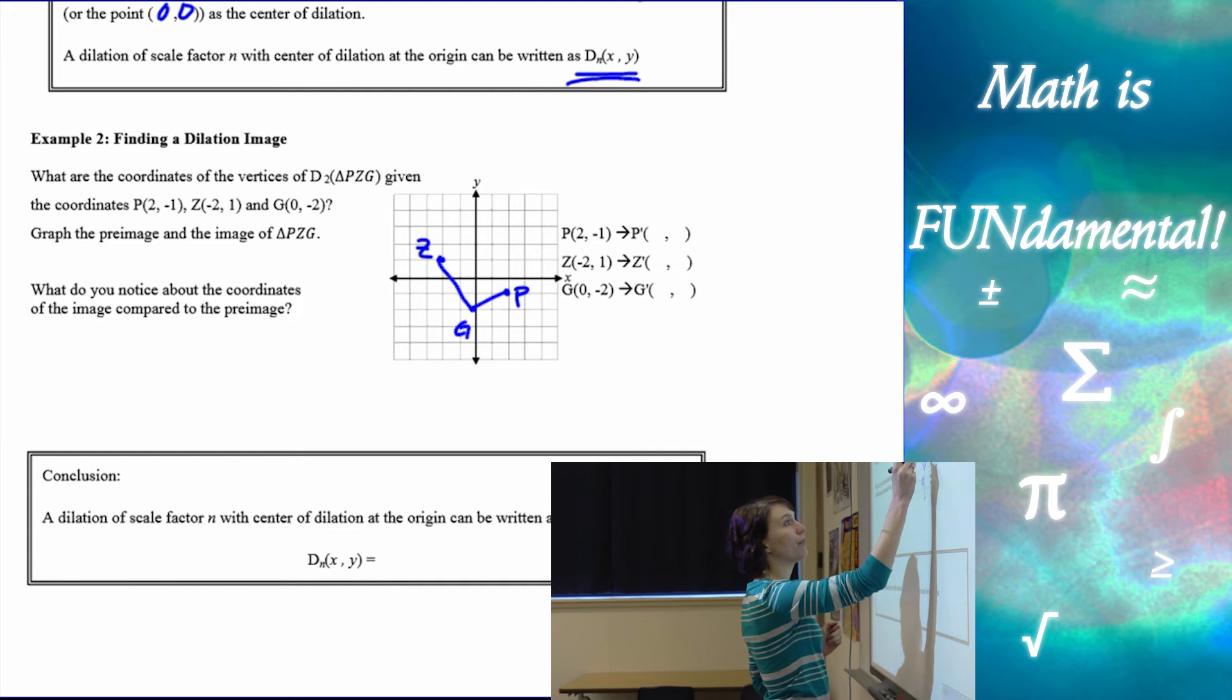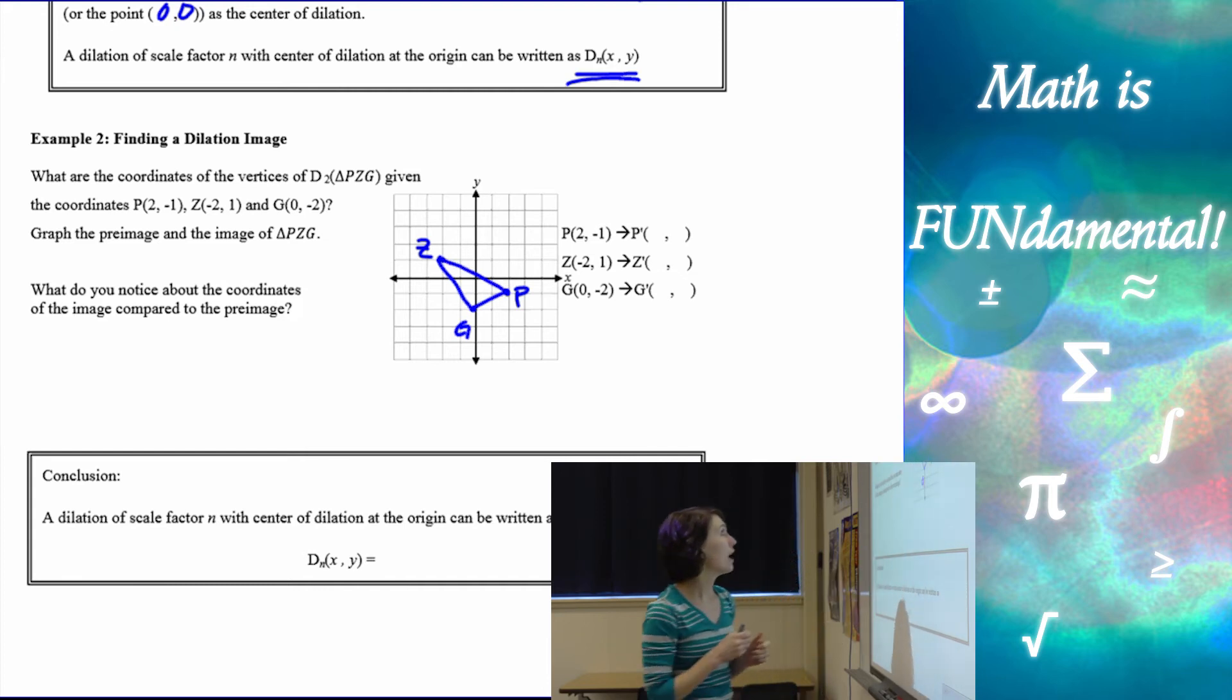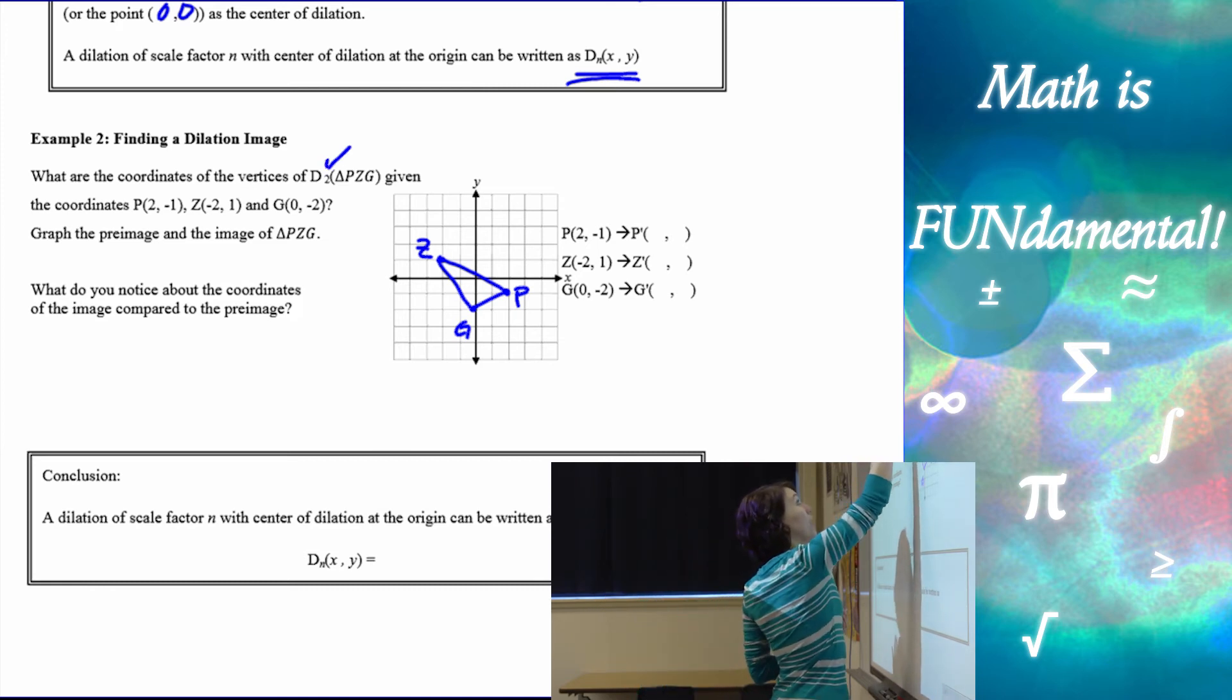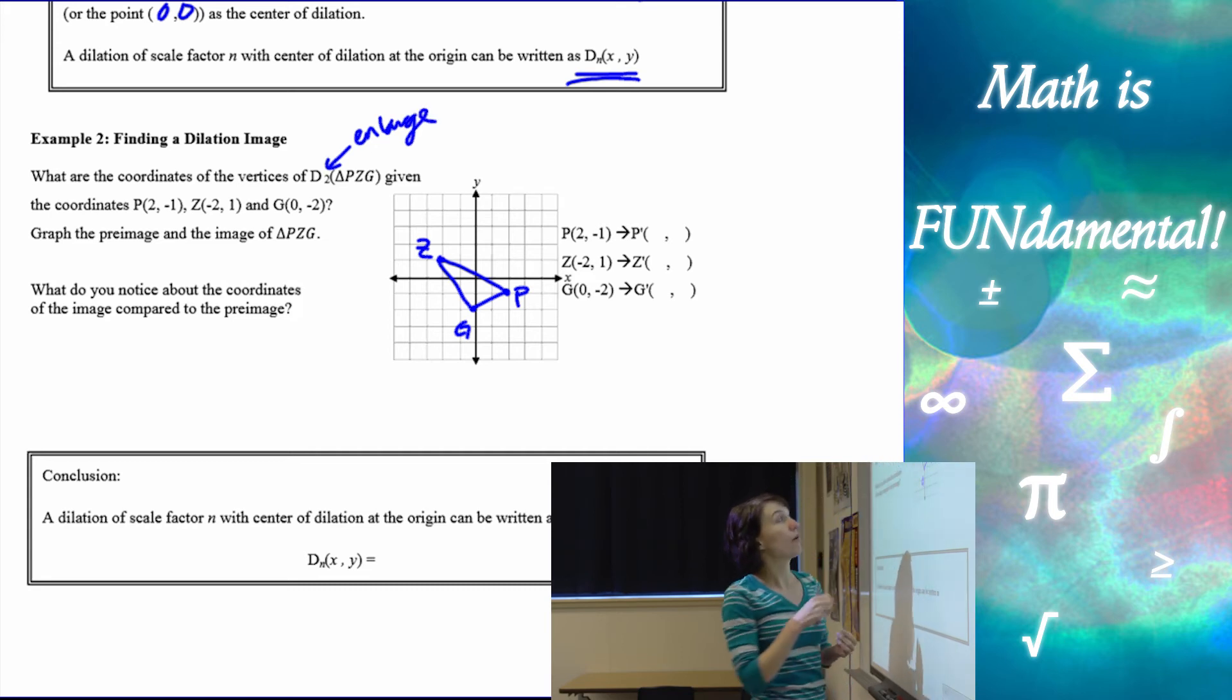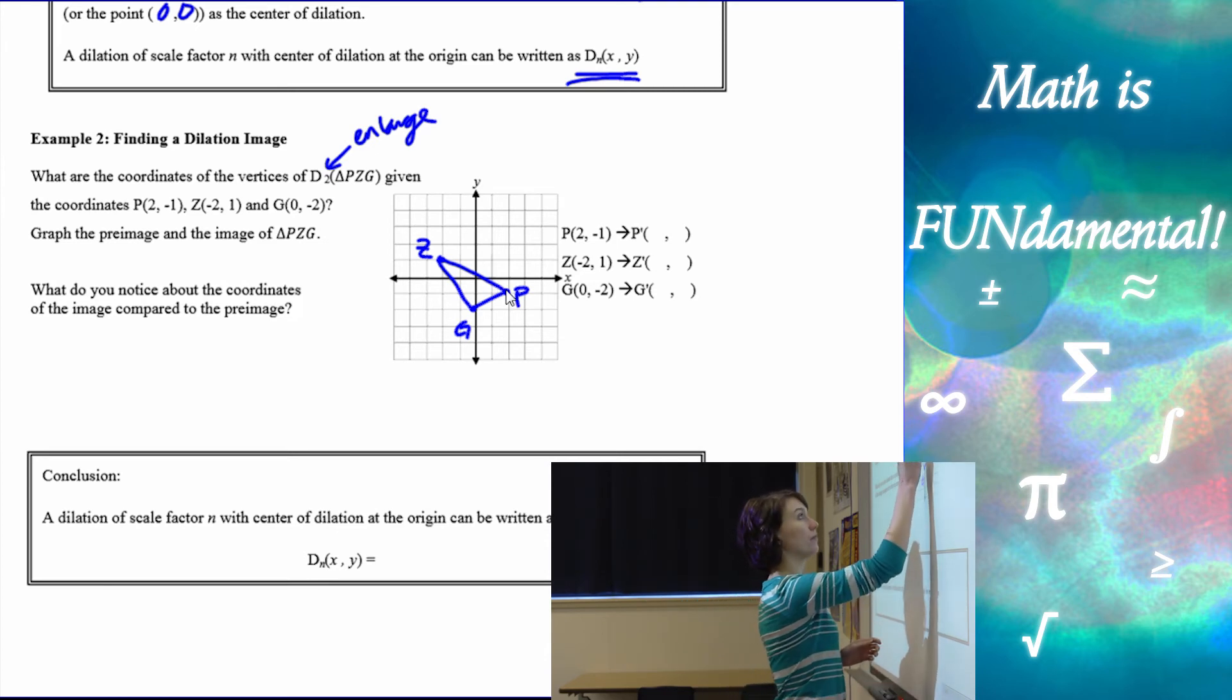So here is my pre-image. Now, my image, I want D2, so I want it to enlarge, right? If it's greater than 1, it's an enlargement. I want it to enlarge by a scale factor of 2.